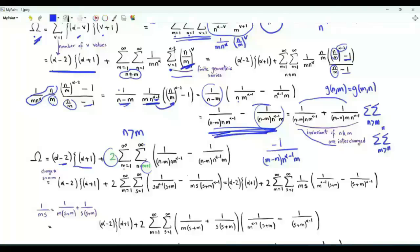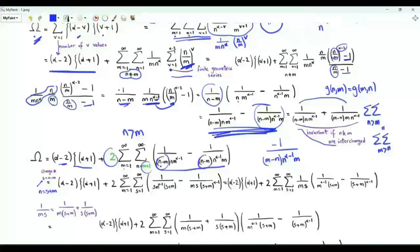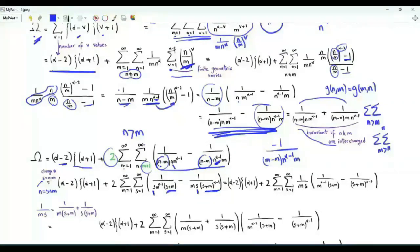We write the summand in this form. Let's change the summation index n to a new index s, where s equals n minus m, so n equals s plus m. Then n minus m becomes s, and n to the alpha minus 1 becomes s plus m all to the alpha minus 1. When n equals m plus 1, s equals 1, and when n tends to infinity, s tends to infinity.